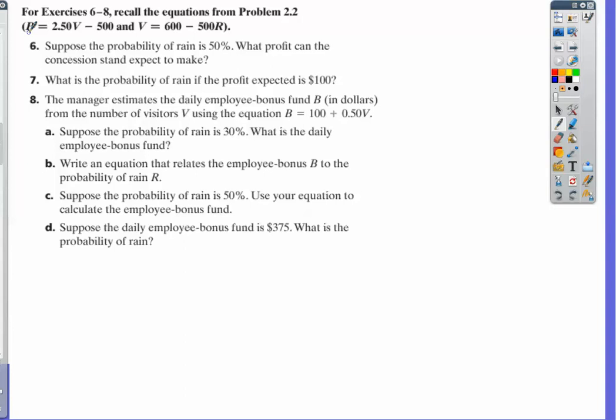In class, we learned that we had visitors in both equations, and we were trying to figure out the profit based on the percentage chance of rain.